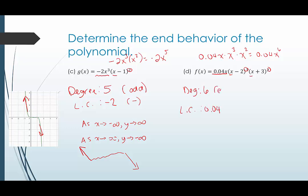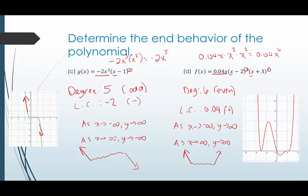Degree six is even, and the leading coefficient 0.04, while very small, is still positive. The small coefficient was chosen to help with the graph scaling. Since the degree is even and positive, as x goes to negative infinity f of x goes to positive infinity, and as x goes to positive infinity y also goes to positive infinity — up in both directions. The graph confirms it's going up on the left and up on the right.